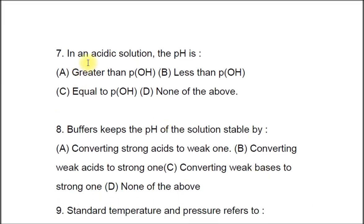Question 7: In an acidic solution the pH is A) greater than pOH, B) less than pOH, C) equal to pOH, D) none of the above. The correct answer is B, less than pOH.